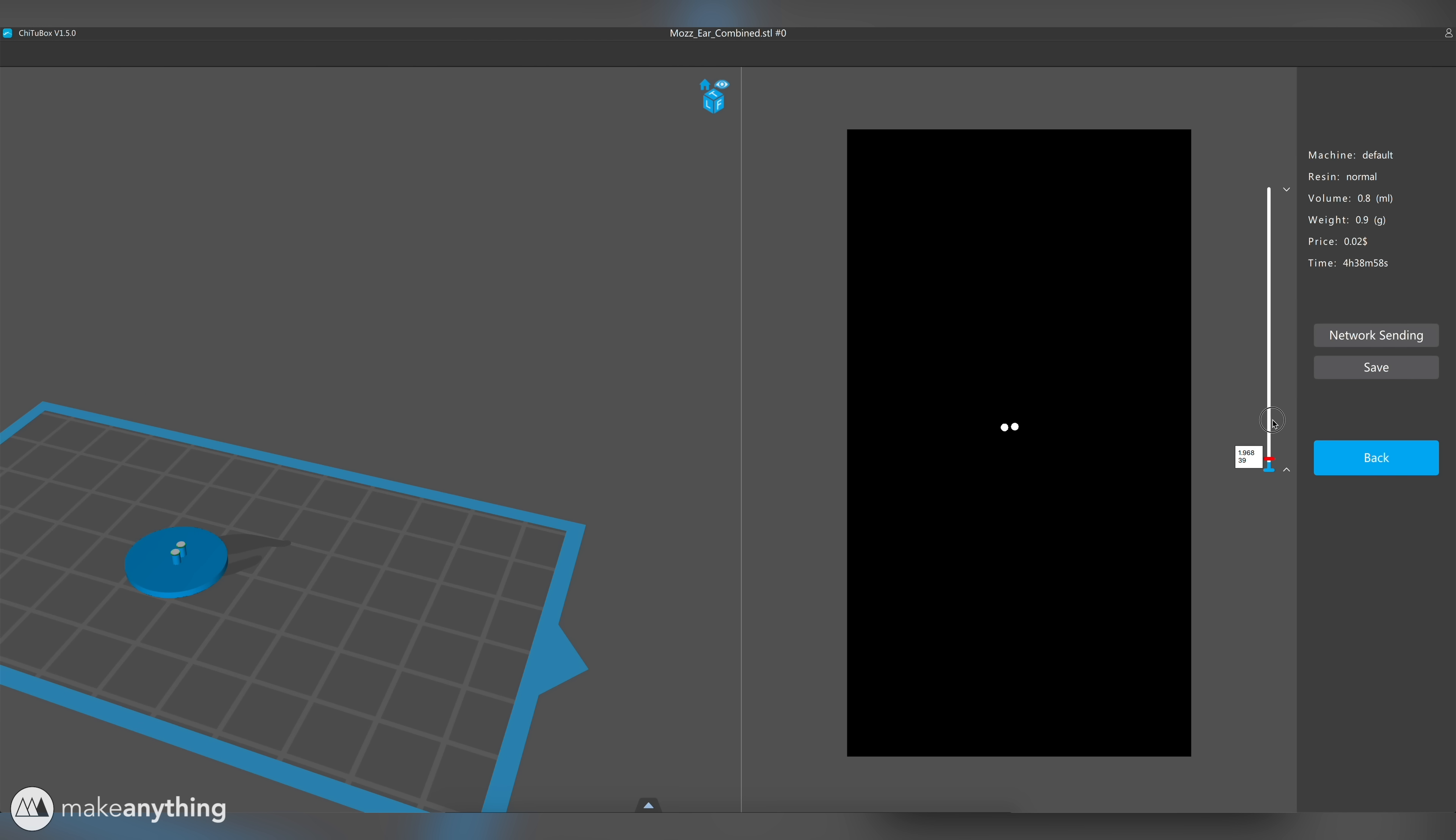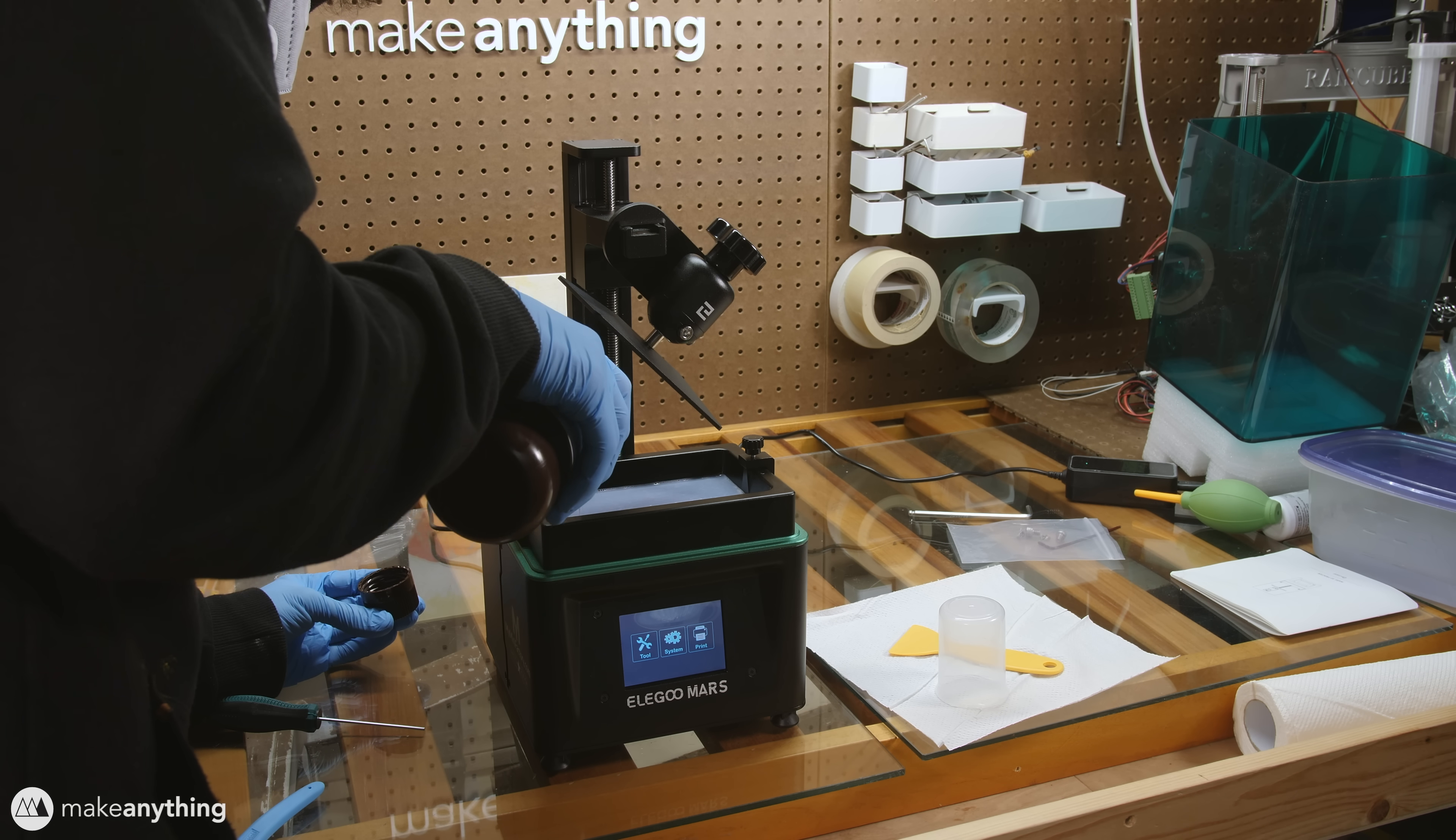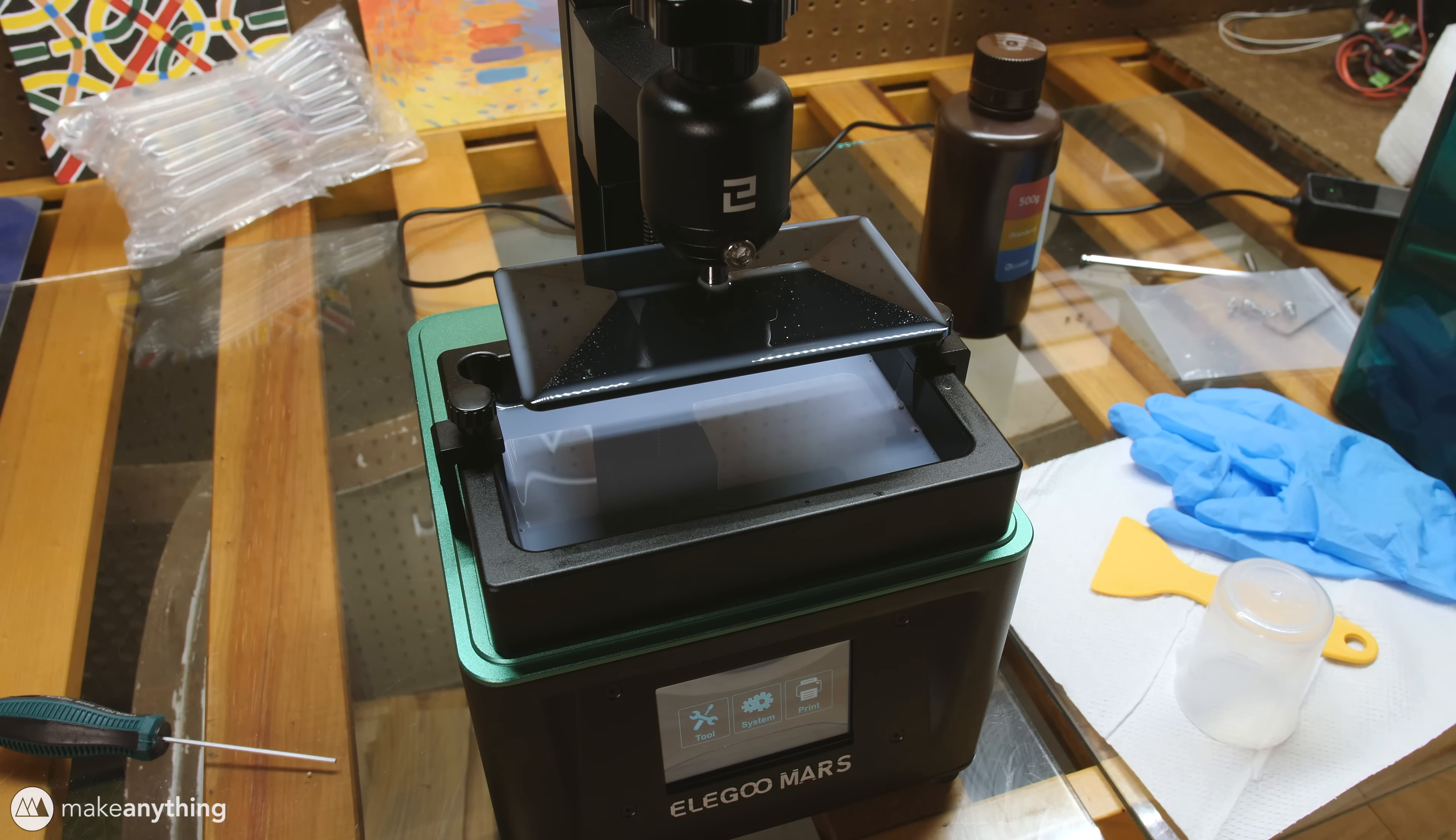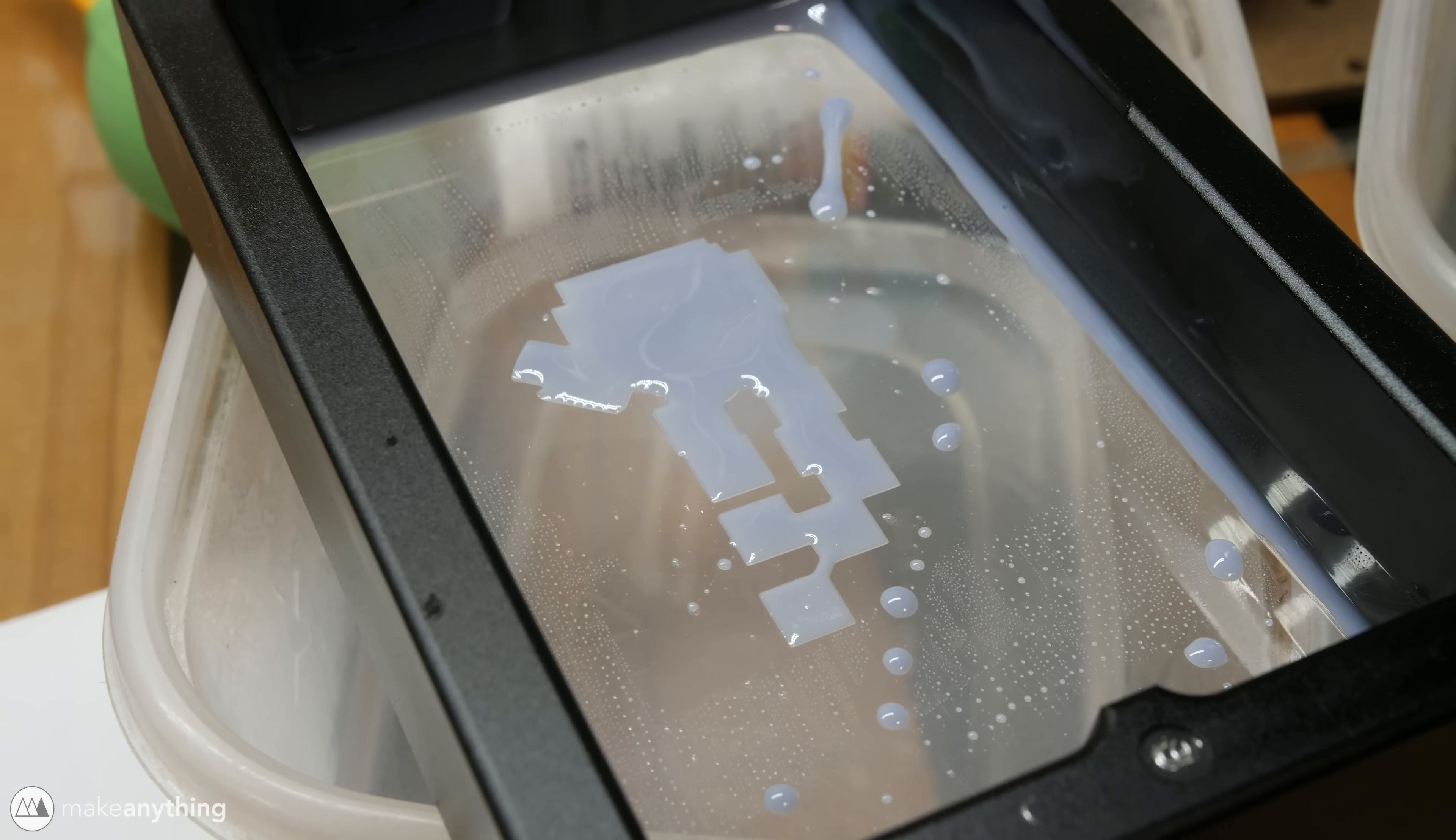But for this second attempt I actually decided to print this leg model instead because this uses the automatically generated supports and rafts in this slicer and if those don't work I don't know what will. So I saved this file to our flash drive, plugged it into the Elegoo Mars and filled up the vat with a new batch of resin. I selected our new model, hit print and once again after a few hours I was met with an empty build plate.